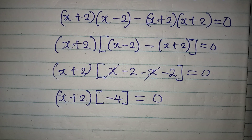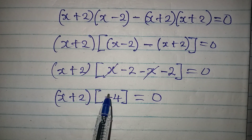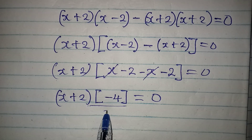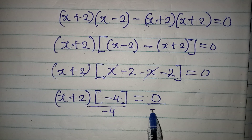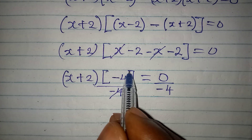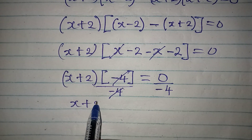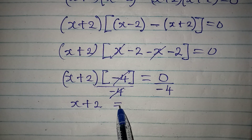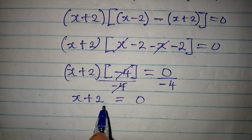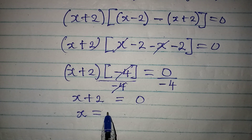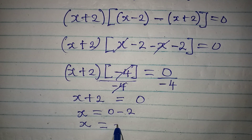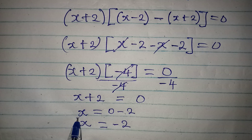Now, there's nothing wrong with opening the bracket by multiplying everything by minus 4, but it's simpler to divide directly by minus 4. That cancels out, leaving x plus 2 alone equal to zero divided by minus 4, which gives zero. From here, x is equal to 0 minus 2, so x equals minus 2.